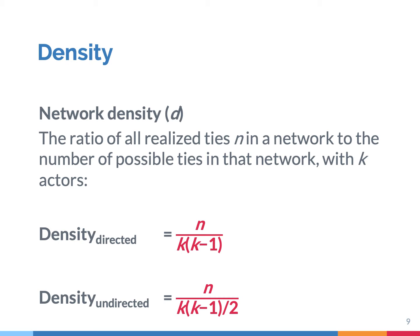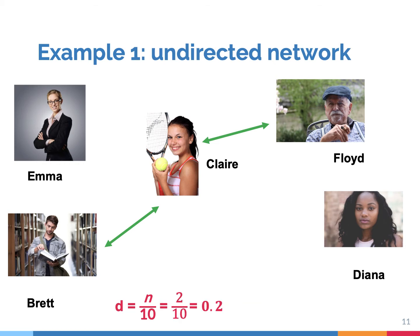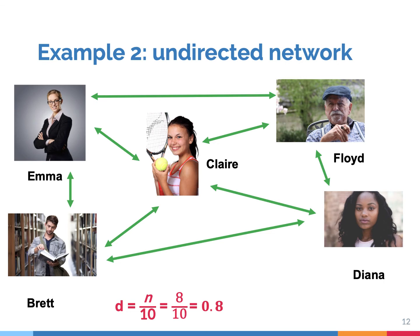How many ties are possible between actors depends on whether we study directed or undirected networks. In a network with directed ties, there are two times as many connections possible as in the same network with only undirected ties. Now let's see what happens when we have an undirected network of five persons — that means the number of actors K is 5. If K is 5, then there are 10 ties possible. We can see that there are only two connections in the network, which means the density is 0.2 — in other words, 20% of all possible ties are realized. That's a rather fragmented network. In the other case, there are eight realized ties, which means the density is 0.8, so much more cohesive.